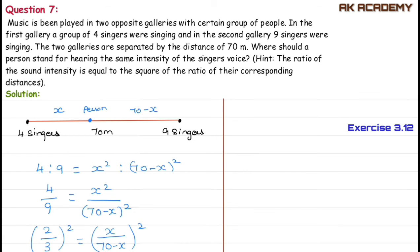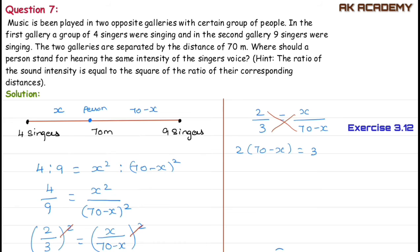Since both sides are squares, the squares cancel out. This gives us 2 by 3 equals x divided by (70 minus x). Now we cross multiply: 2 times (70 minus x) equals 3x.